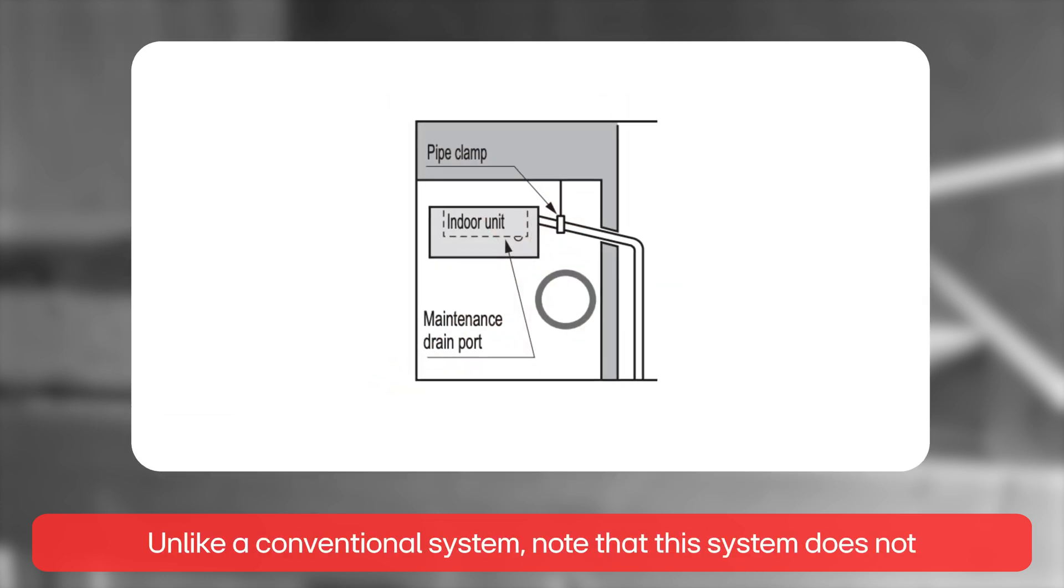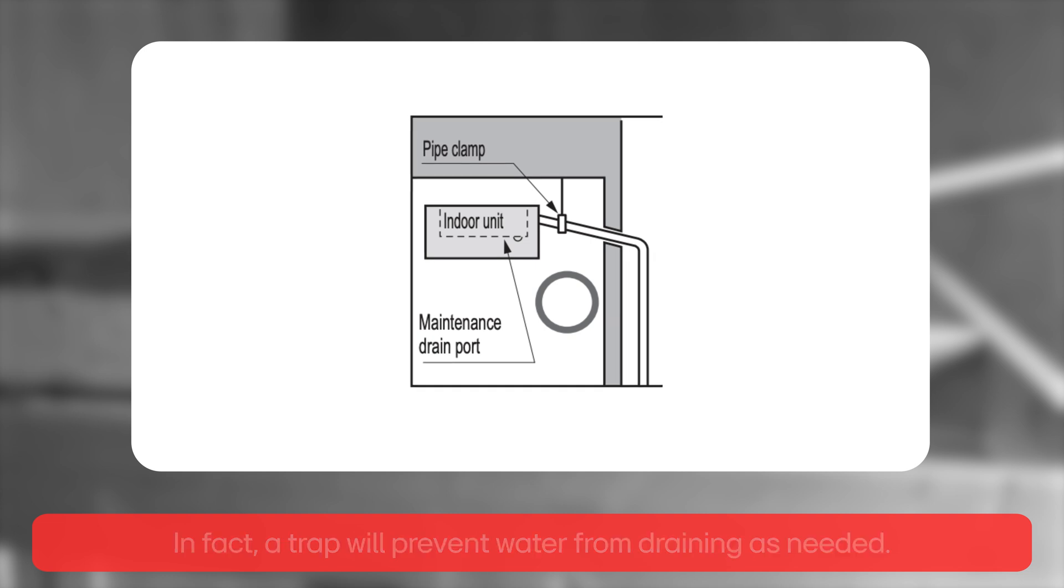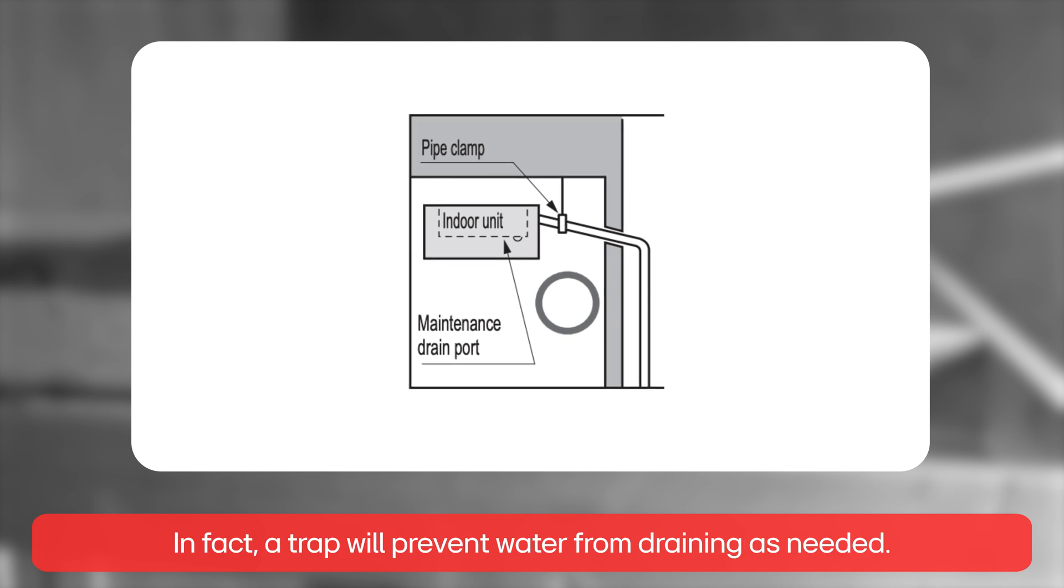Unlike a conventional system, note that this system does not have the capability to pull water or air back through the drain and therefore it does not need a trap. In fact, a trap will prevent water from draining as needed.